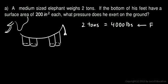That's what will be F in our equation. And the area is going to be the 200 square inches. Each foot has an area of 200 square inches, so it's 200 square inches times 4, which is a total of 800 square inches. That's going to be the area that we use.